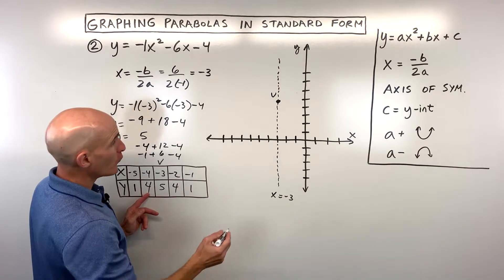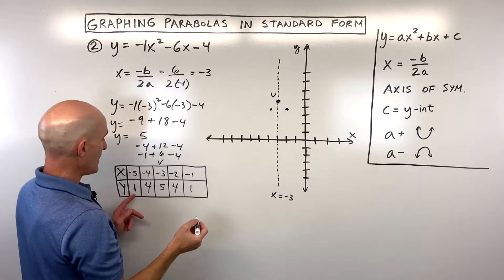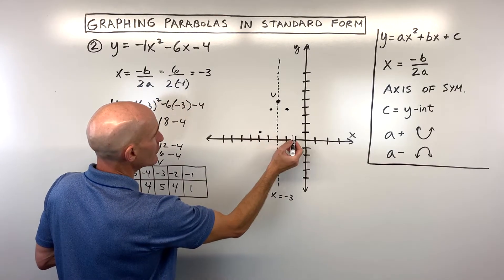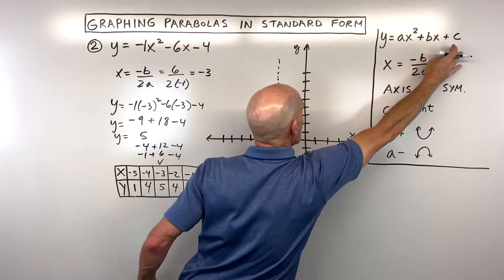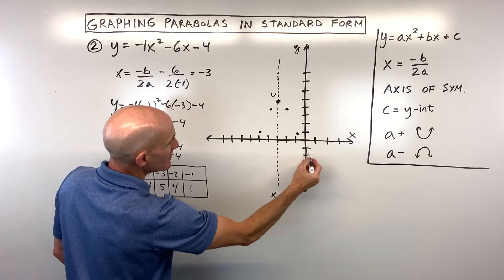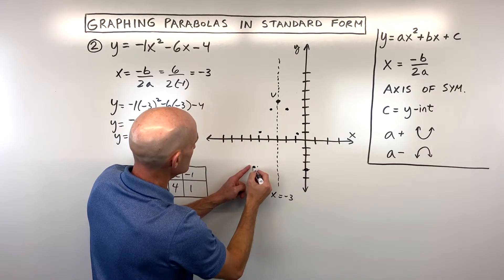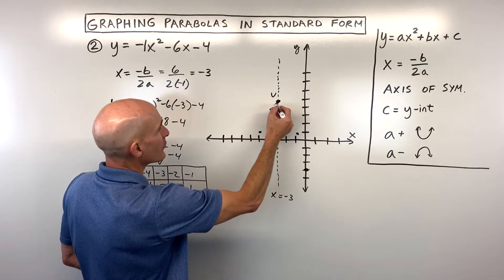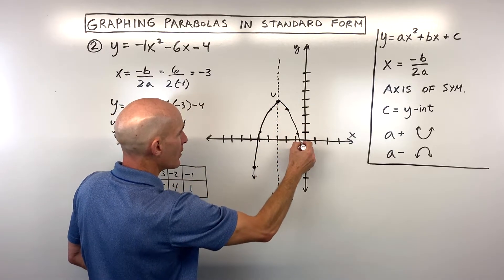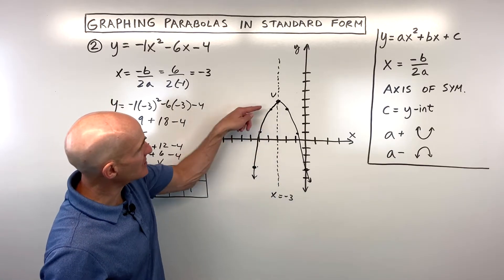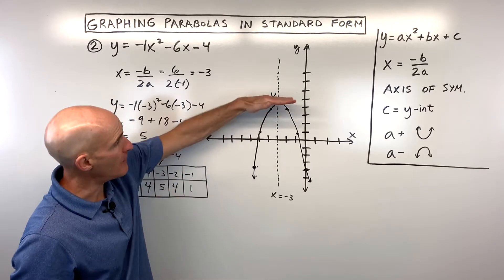Plotting (negative 4, 4) and reflecting over the line of symmetry, then (negative 5, 1) and reflecting it. We can also find the y-intercept — that's the c value, which is negative 4, so the graph crosses at negative 4 on the y-axis. Reflecting that over the line of symmetry gives another point. The graph opens down with a maximum value — the highest it reaches is the y-coordinate of the vertex, so the maximum is 5.